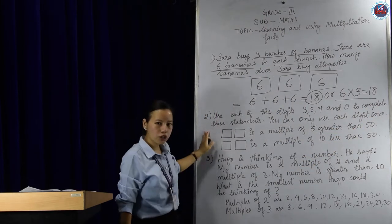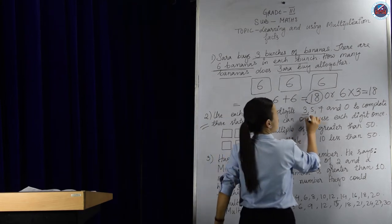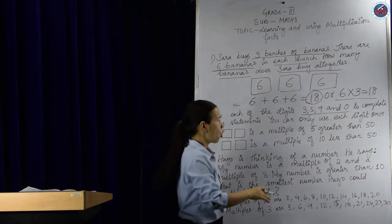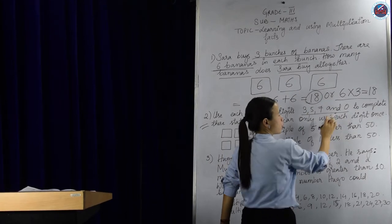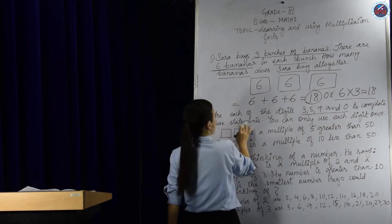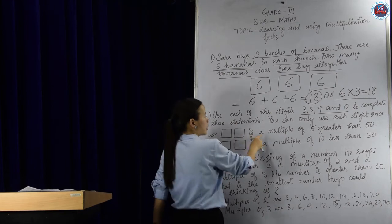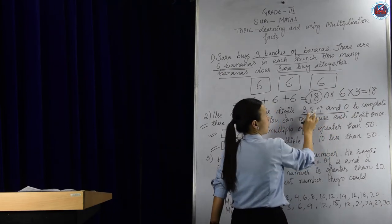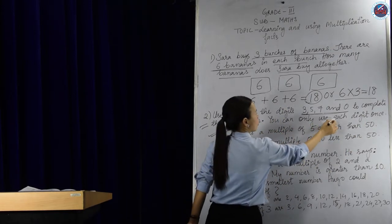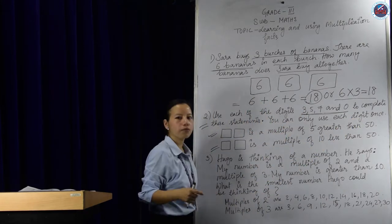Now let's go to the second question. It says: use each of the digits 3, 5, 7, and 0 to complete the statements. You can only use each digit once — remember, you cannot repeat the same number again. We are going to complete these two statements using only the digits 3, 5, 7, and 0.